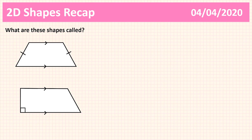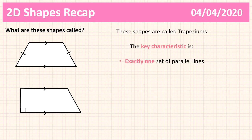This shape you may not have come across before — pause and think about what it's called and what its key characteristics are. This shape is called a trapezium; in America they're called a trapezoid, so if you see that word online it means trapezium. The key characteristic is that they have exactly one set of parallel lines, as you can see here — denoted by the arrows.